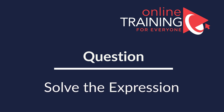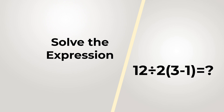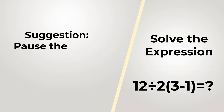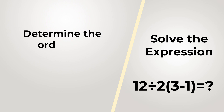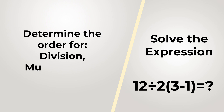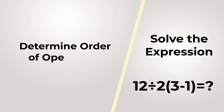Here's an interesting question: calculate the expression 12 divided by 2, multiplied by the value in parentheses, which is 3 minus 1. Take a close look and see if you can come up with the answer. There are three operations here — division, multiplication, and subtraction. All you need to determine is which one to do first, second, and third.